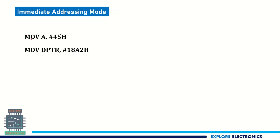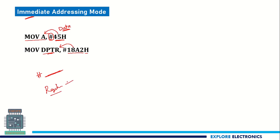The first one is immediate addressing mode. Here you can see: MOV A, #45H. This hash symbol indicates that the value specified is data. Whatever data we specify here will be moved to the accumulator register. Similarly, MOV DPTR, #1882H means this is the data we are moving directly to the DPTR register — that is, the data pointer. The name 'immediate' is given because whatever data we give is immediate data. We are not specifying any register address — we are loading the data immediately. That is why, if you have a hash, you can directly say it is immediate addressing mode.